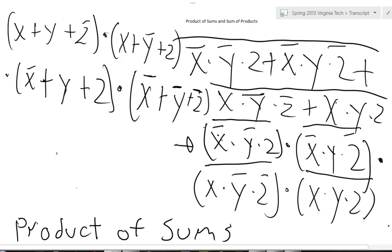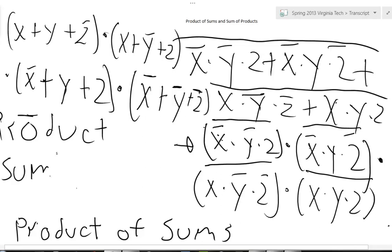The key thing to remember is that for the product of sums, you complement it at the end and look for the zeros. For the sum of products, you look for the ones and do the same algorithm without taking the complement. That's the way to think about it. I hope you guys have a great day, and thank you — I'll see you later.